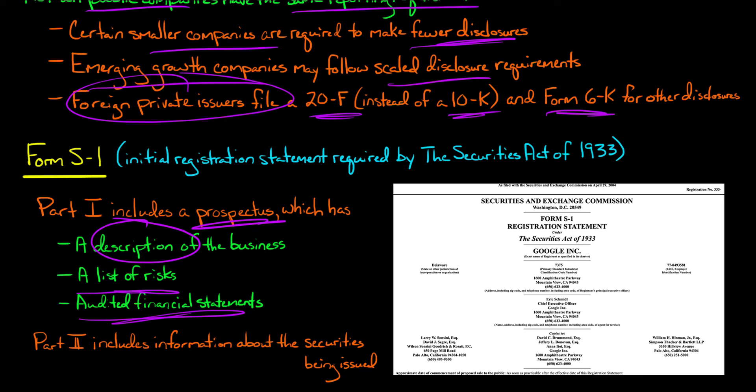Part two is going to include information about the type of securities being issued, the issuance costs of those securities, and so forth. Now you can see an example here of an S-1 for the company Google, and this was actually filed with the SEC April 29th, 2004. So an S-1 is filed before the company does its IPO.